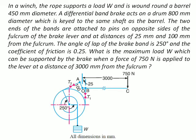So let us see the diagram. There is a winch wound around this barrel. This barrel is 450 mm in diameter. The brake drum is 800 mm in diameter. This is the differential brake arrangement. The 750 N operating force is applied at a distance of 3000 mm from the fulcrum O. OB is 25, OA is 100, and a load W is attached to this rope which is wound around the barrel.